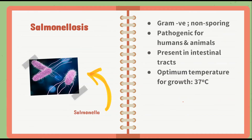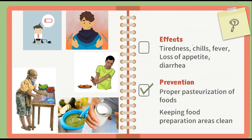Next is Salmonellosis, caused by Salmonella. Salmonella is a gram-negative, non-sporing bacteria that is pathogenic for humans and animals. It is present in intestinal tracts of humans as well as birds, reptiles, and insects. The optimum temperature for growth is 37 degrees Celsius, though it can grow between 32 to 39 degrees Celsius. Effects include tiredness, chills, fever, loss of appetite, and diarrhea. Prevention includes proper pasteurization of foods such as HTST or LTLT, and keeping food preparation areas clean to avoid contamination.